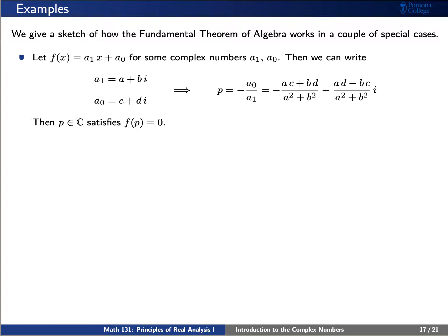Well, if we write a1 as a plus bi and a0 as c plus di, then we can see that our root p should be negative a0 over a1, and now we just use the properties we mentioned before to see that we do have a complex number p which satisfies f of p equals 0.